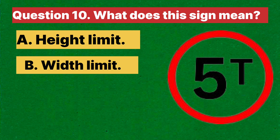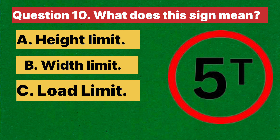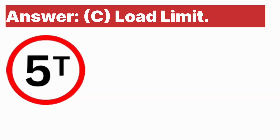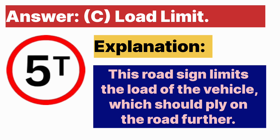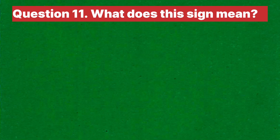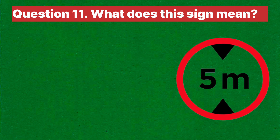Question ten: What does this sign mean? A. Height limit. B. Width limit. C. Load limit. D. None of the above. Answer is C, load limit. Explanation: this road sign limits the load of the vehicle which should apply on the road.